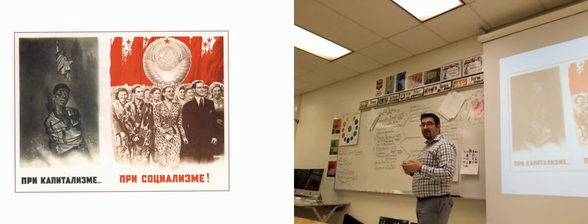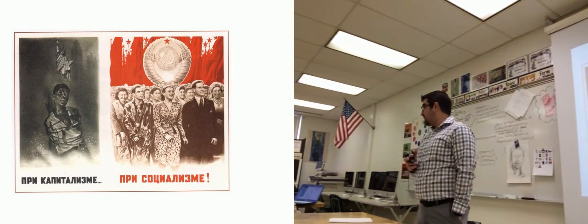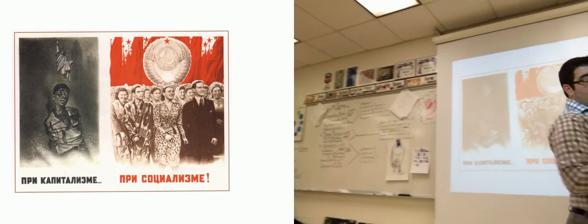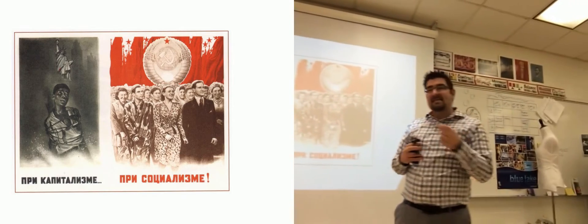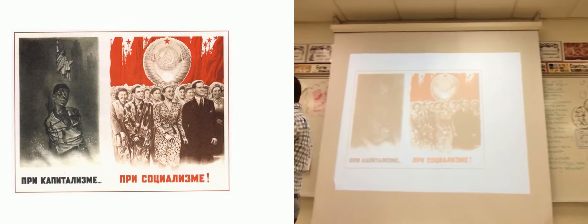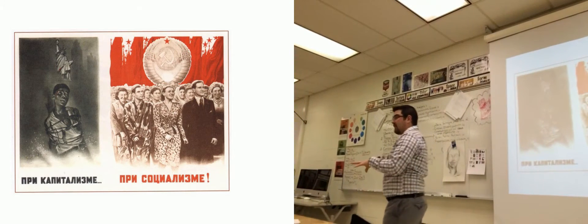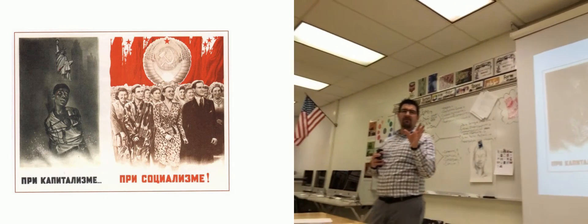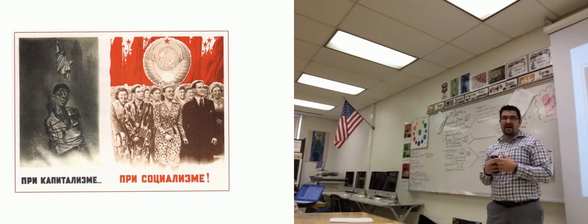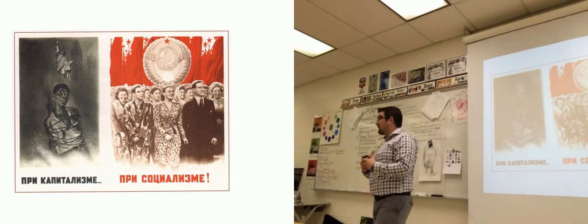Let's talk about the 1954 Brown v. Board of Education case. Since 1896, the Supreme Court had ruled that as long as facilities were equal, they could be separated by race — that was done under Plessy v. Ferguson in 1896. That made separate but equal the law of the land.